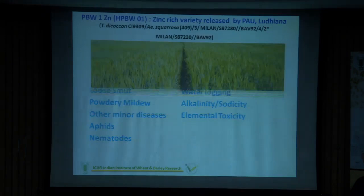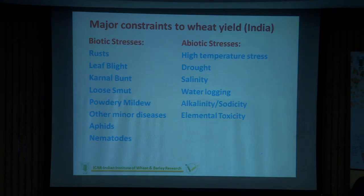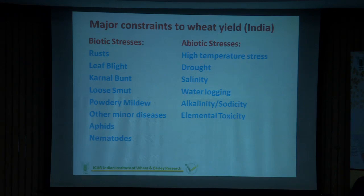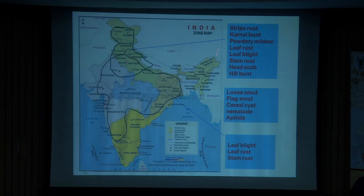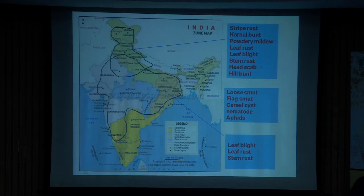This was about what varieties we developed. The later part of the presentation is about the problems and issues that the Indian wheat program is facing. Under biotic stresses: rust, leaf blight, Karnal bunt, loose smut, and other diseases. Under abiotic: heat, drought, waterlogging. These are the major problems across northern states — Punjab, Haryana, eastern UP, eastern Rajasthan, western Uttar Pradesh. Rust is the most important disease in wheat, and there are three different types: yellow rust, black rust or stem rust, and leaf rust or brown rust.